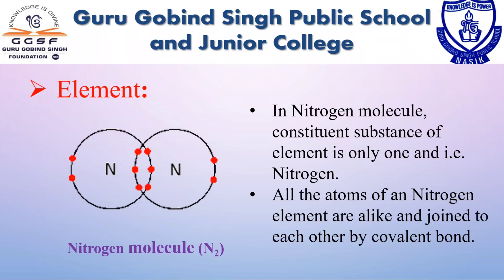Here is the example of the nitrogen element. In a nitrogen molecule, the constituent substance is only one — nitrogen. All the atoms of a nitrogen element are alike and joined to each other by a covalent bond. A covalent bond is a chemical bond that involves the sharing of electron pairs between atoms.